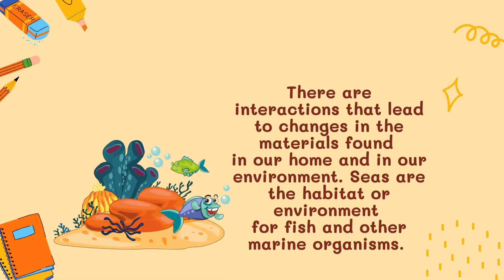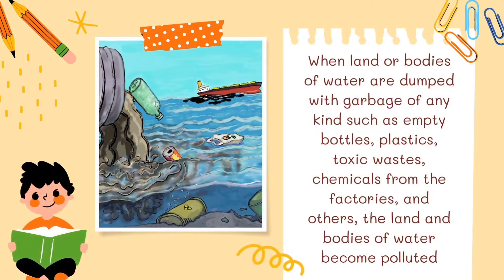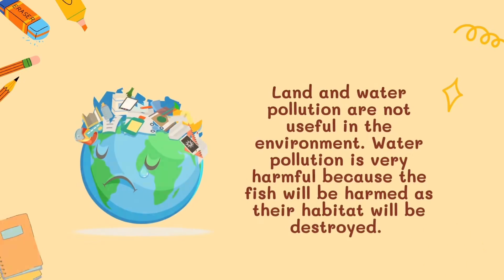Seas are the habitat or environment for fish and other marine organisms. When land or bodies of water are dumped with garbage of any kind such as empty bottles, plastics, toxic wastes, chemicals from factories, and others, the land and bodies of water become polluted. Land and water pollution are not useful in the environment.